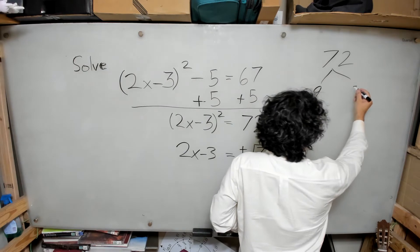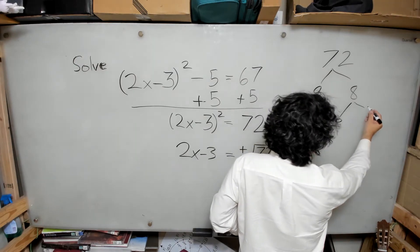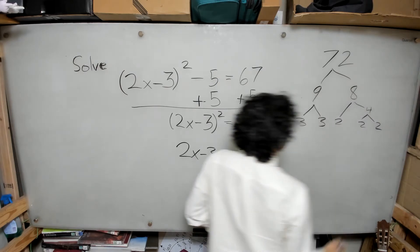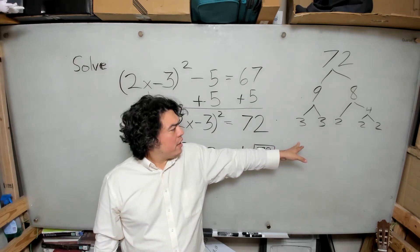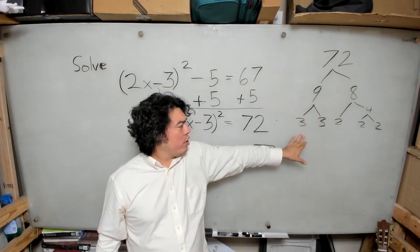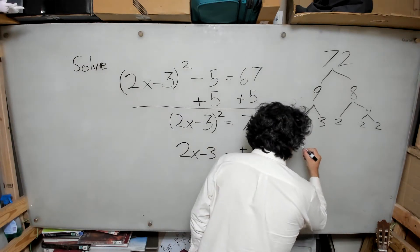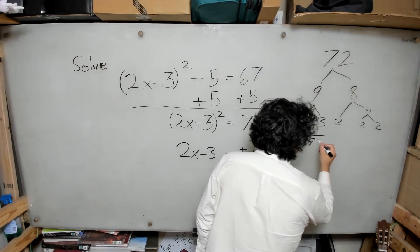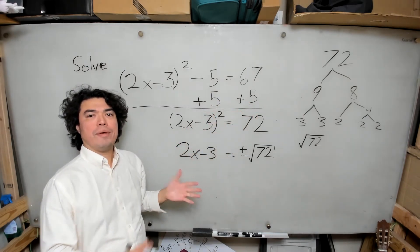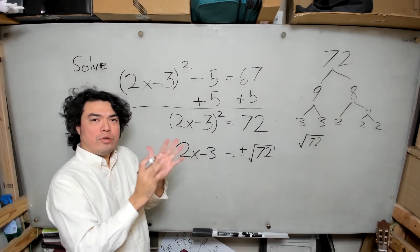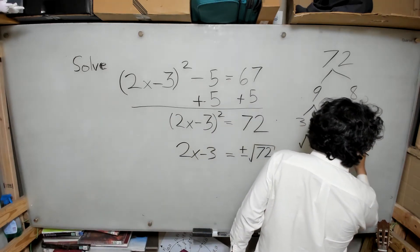I know that 72 is 9 times 8, that 9 is 3 times 3, that 8 is 2 times 4, and that 4 is 2 times 2. This factor tree tells me I can replace 72 inside the square root with 3 times 3 times 2 times 2 times 2. When doing this work, use a scratch paper or the side of your page — don't try to do it in your head. Always write out your steps.